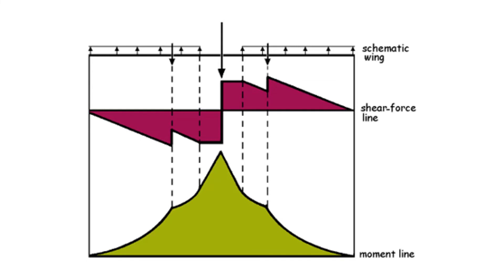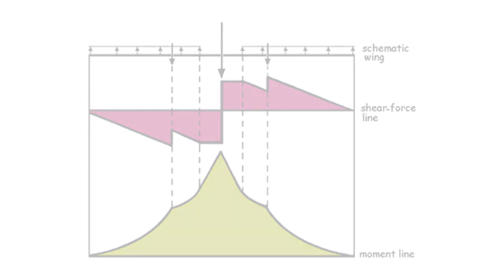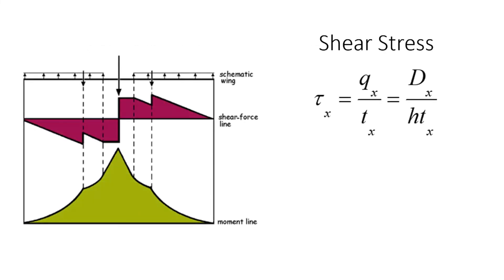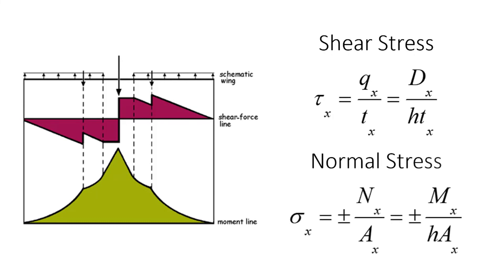Once we know the shear force and bending moment at each location, we can calculate the shear stress and normal stress in the spar caps. The shear stress in the webs is the shear flow divided by the thickness of the web. The normal stress in the spar caps is the normal force divided by the area of the spar caps, which is also equal to the bending moment divided by the moment of resistance — the height times the area of the spar cap.